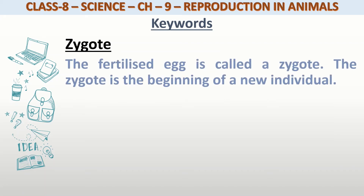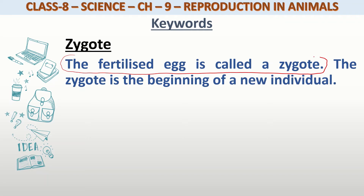Zygote. What is a zygote? The fertilized egg is called a zygote. This egg is called a female gamete. When the male gamete comes to fertilize it, the resulting fertilized egg is called a zygote.